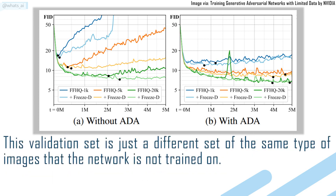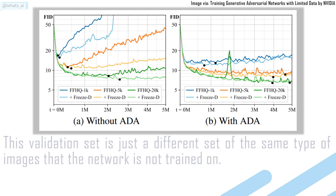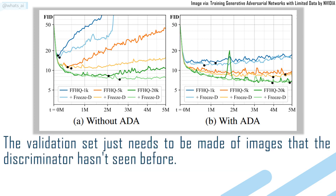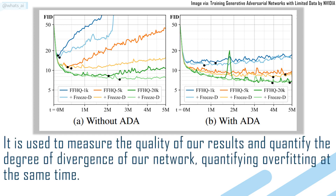This validation set is just a different set of the same type of images that the network is not trained on. The validation set just needs to be made of images that the discriminator hasn't seen before. It is used to measure the quality of our results and quantify the degree of divergence of our network, quantifying overfitting at the same time.